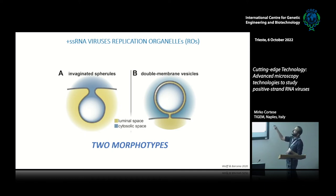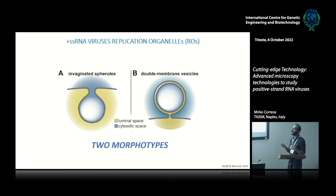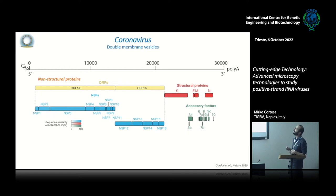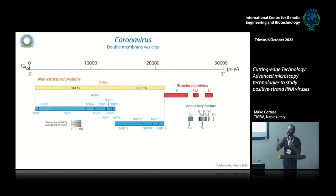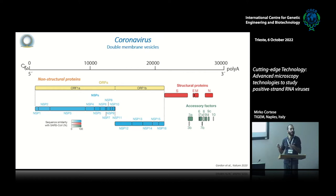Now I want to show the second morphotype — double membrane vesicles — using coronaviruses as a model. The coronavirus genome is very long — about three times the size of flavivirus at 10,000 nucleotides — and contains many more functions. It has the same modules: structural proteins for virus formation and non-structural proteins for genome replication, plus accessory factors involved in pathogenesis and stopping the cellular immune response.